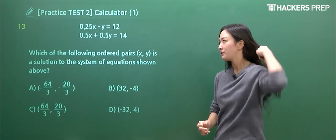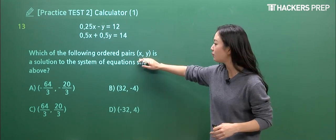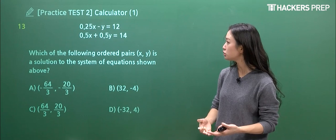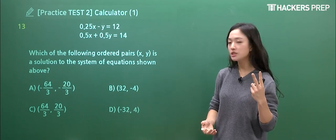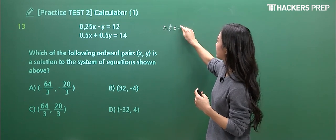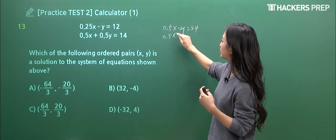Question thirteen. So we have a system of linear equations, and X, Y is a solution, and they're asking for the specific value. What do you do? Should we multiply 2 for the top equation? So you get 0.5 of X, negative 2Y is equal to 24. And let's just leave the second equation as it is.